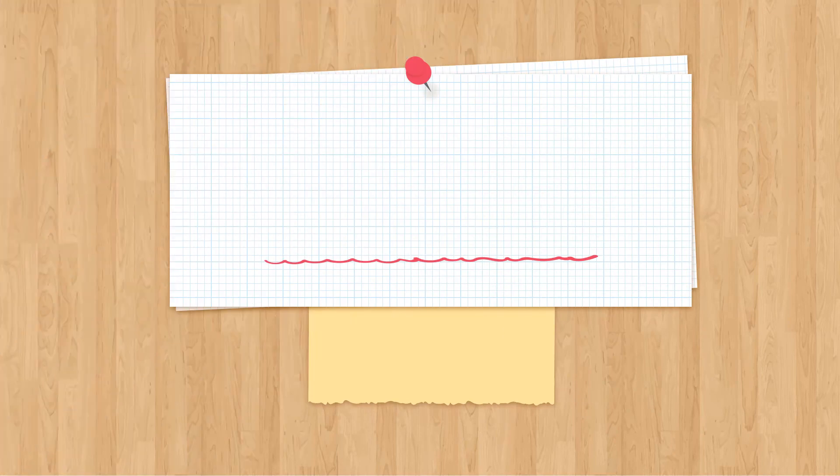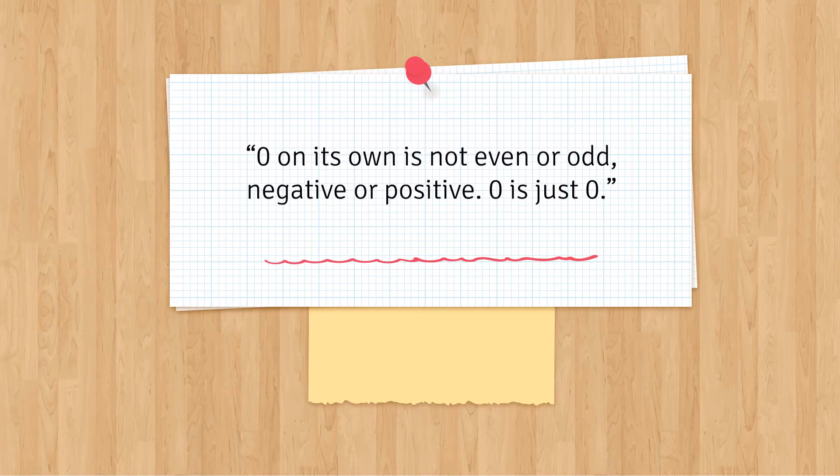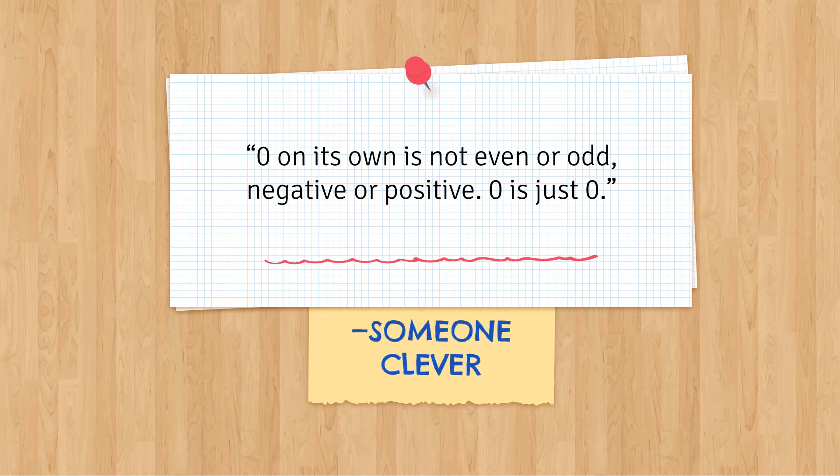Whoa, here are some more interesting facts. Even numbers are always divisible by two. Let's look at this quote. Zero on its own is not even or odd, negative or positive. Zero is just zero. Now you may ask me, but who said this? Well, it should have been someone clever.